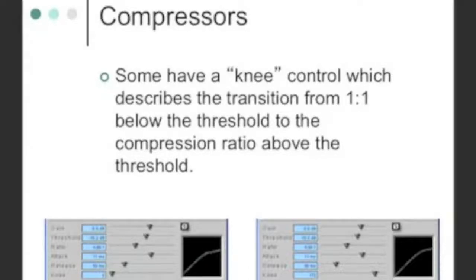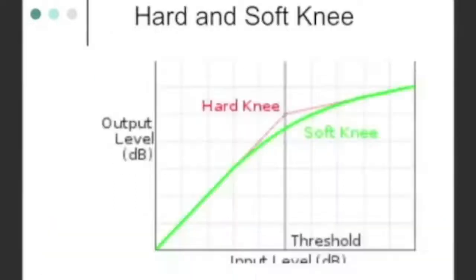Typically speaking, the soft knee kind of compressors, and here, let me give you an example. I've got another diagram here. The hard knee versus the soft knee. Red is hard knee, green is soft knee.